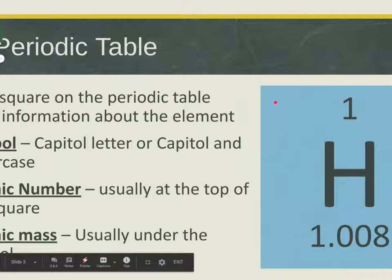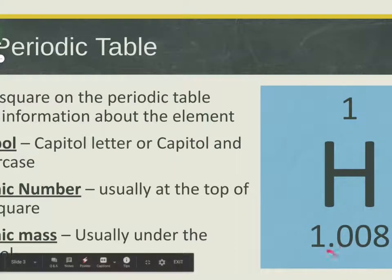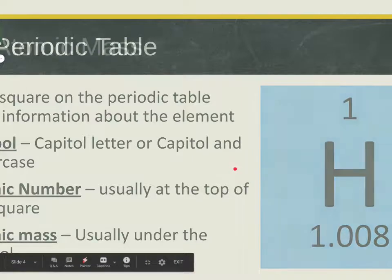The atomic number is sometimes in the left corner, sometimes in the right corner, sometimes right in the middle — it's usually at the top in most published periodic tables. The one with the decimals, that's our atomic mass. Notice I said atomic mass and not mass number. Mass number is the sum of protons plus neutrons; atomic mass is the number on the periodic table.